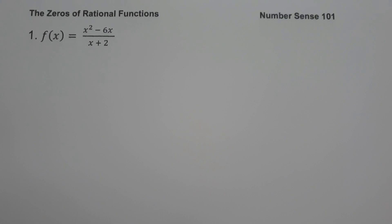On the first example, we have f of x equals x squared minus 6x all over x plus 2. To find the zeros of a rational function, the first step is to factor the numerator and the denominator.